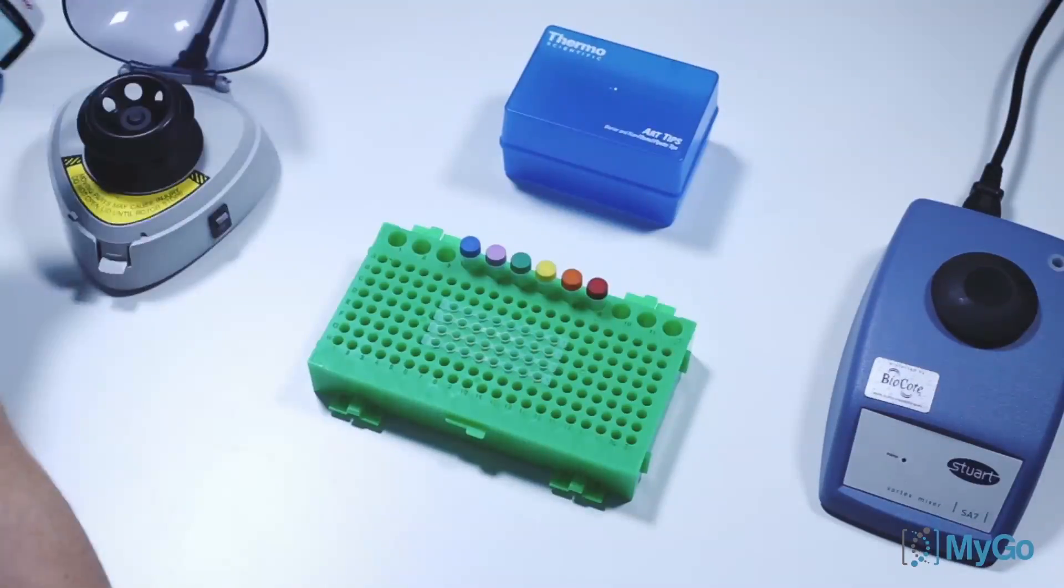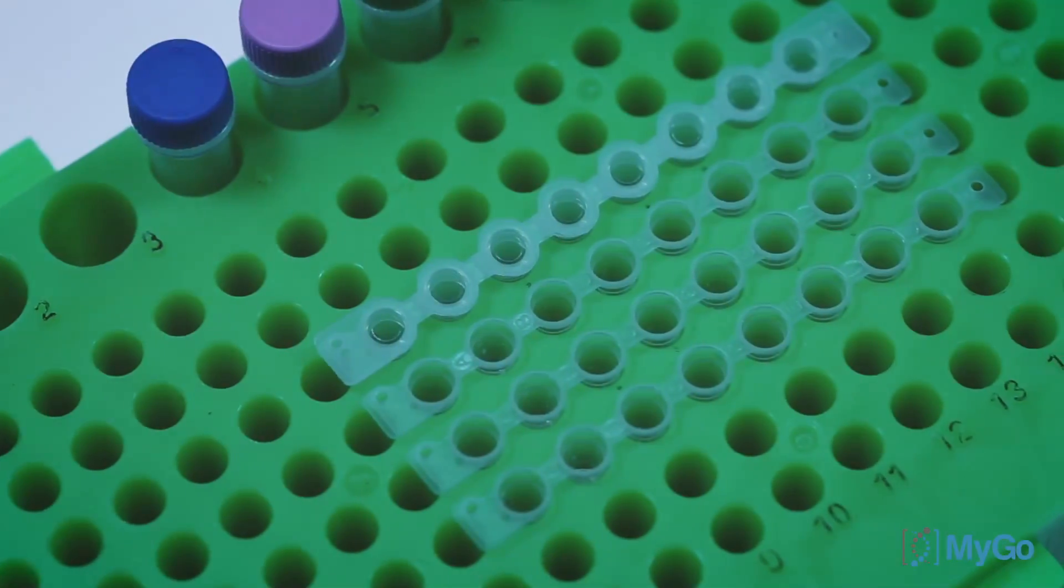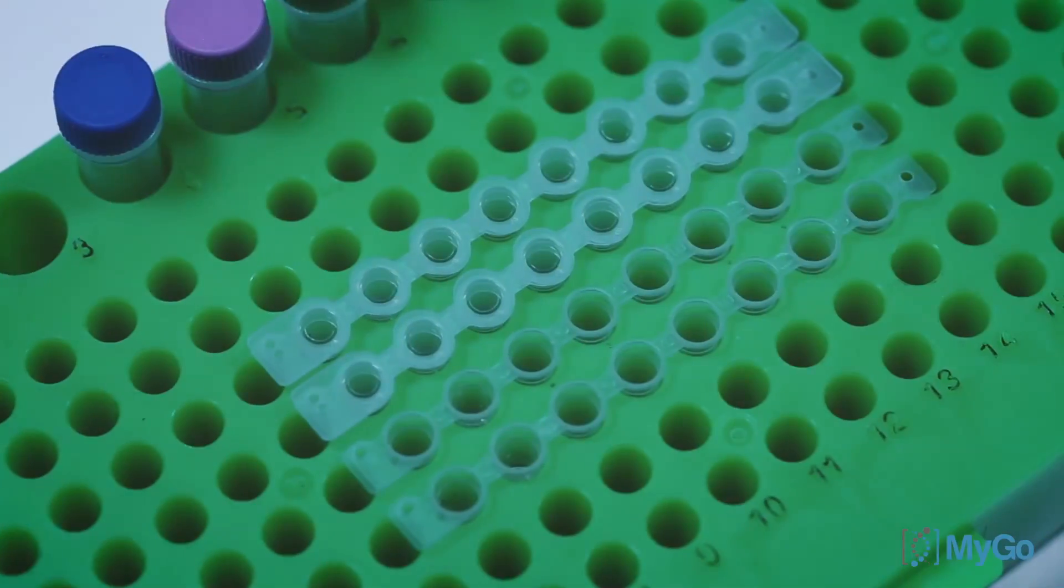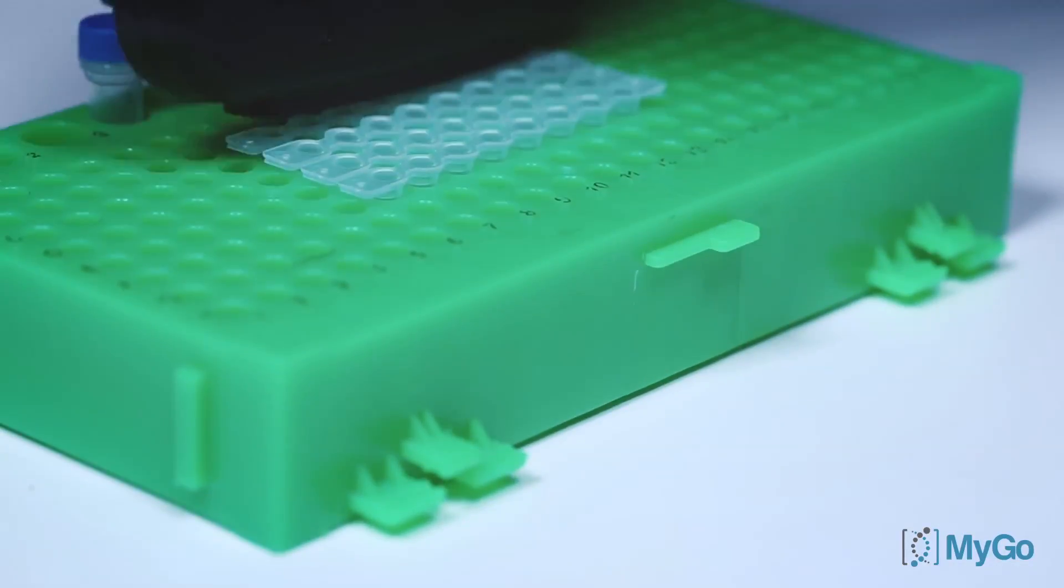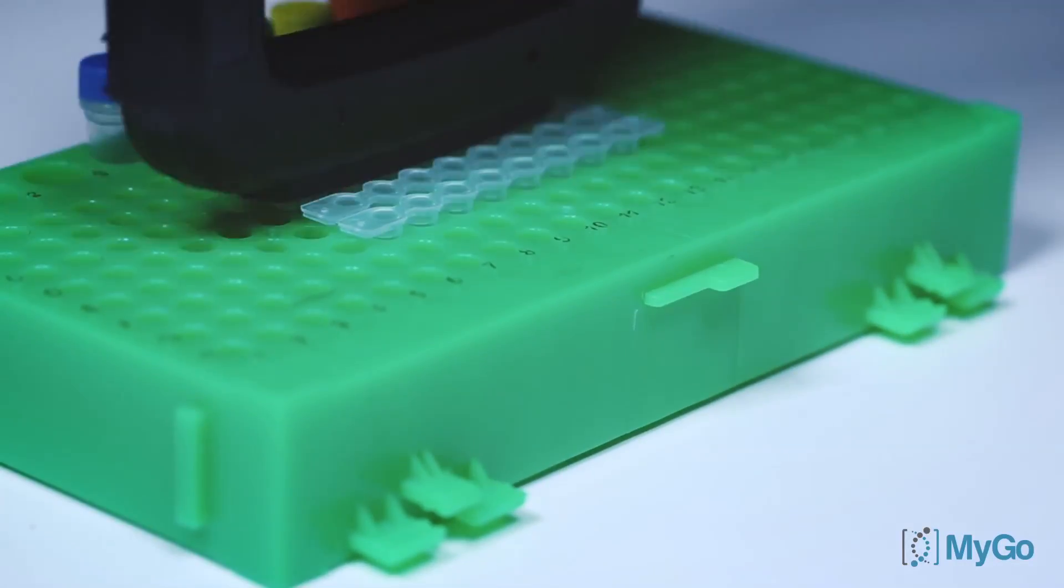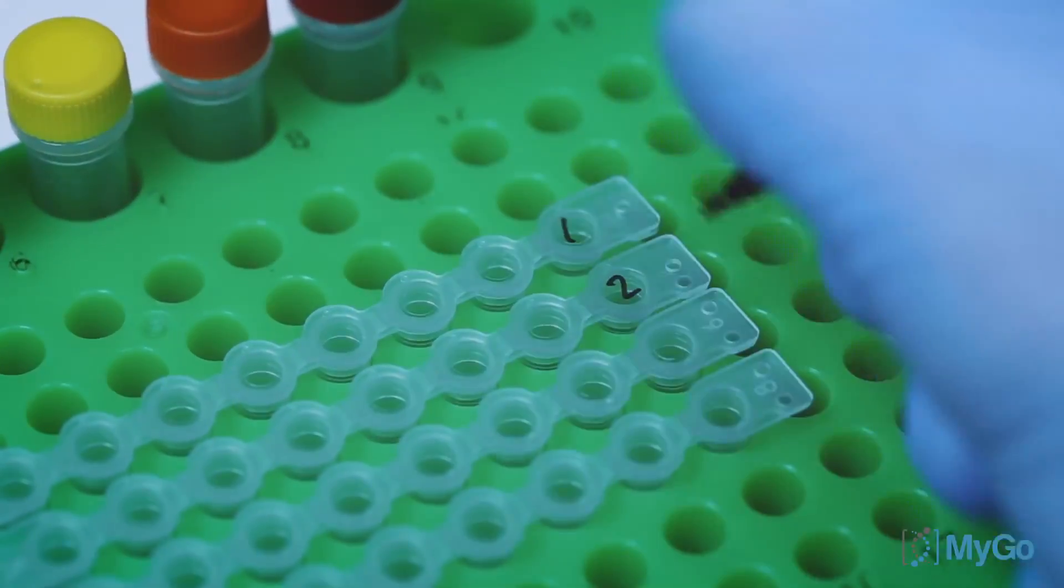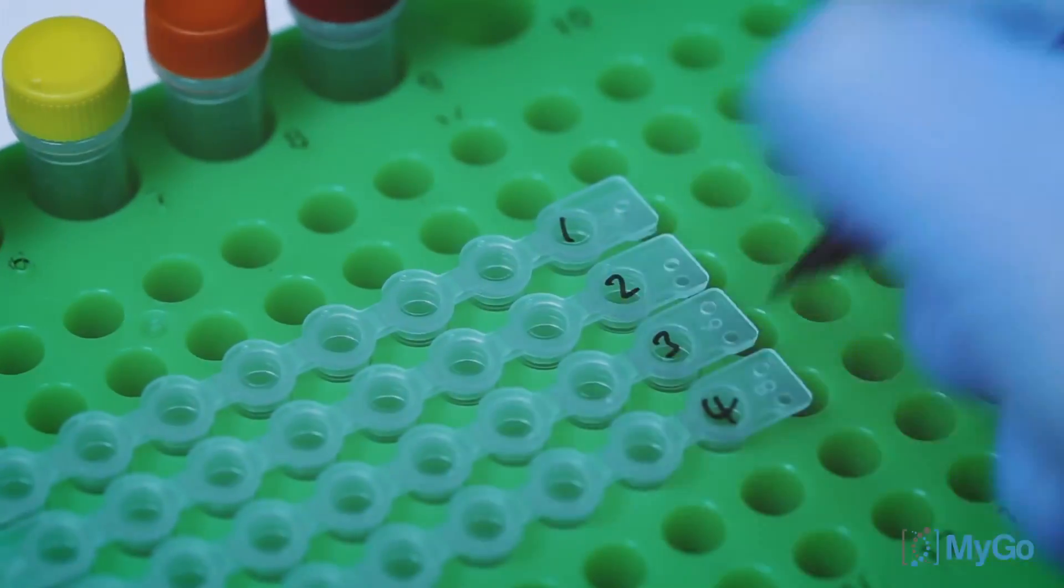Seal the tubes with the MYGO 8-well strip caps, and if available add extra force. Make sure that each strip is sealed securely and take care when sealing the tubes not to damage the rims of the caps. Strips can be labeled on the top but must not be labeled from the side.